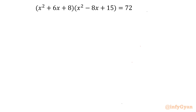Hello everyone, welcome to InfiGaam. In this very exciting video of algebraic challenging equations, we are going to solve an interesting quadratic equation. The equation is x² + 6x + 8 times x² - 8x + 15 equal to 72. While solving, I will use algebraic identities, manipulation, quadratic equation, and quadratic formula. So let's get started.